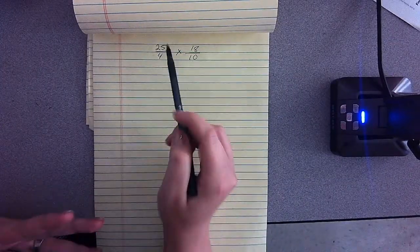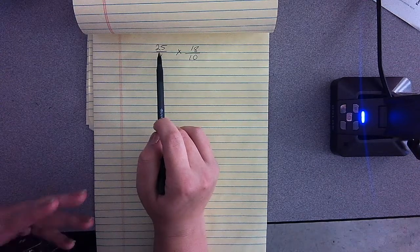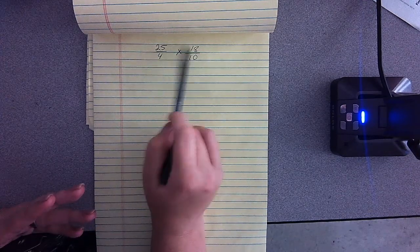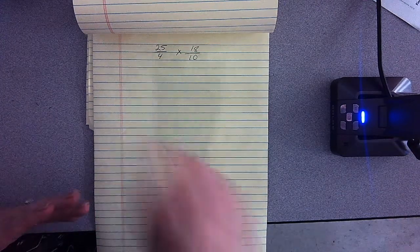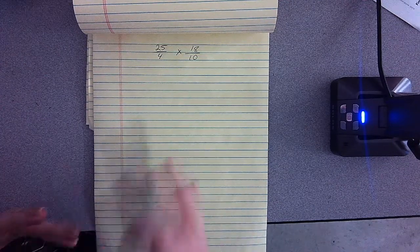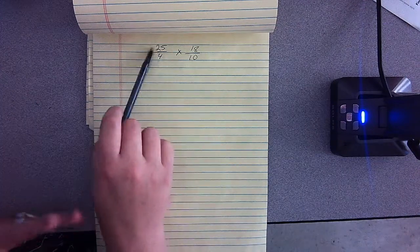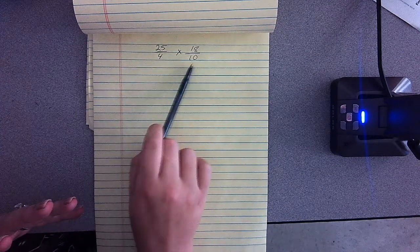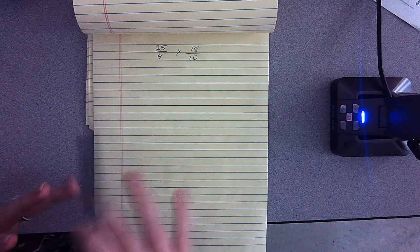So it would just be easier to do method two rather than have to do two by two digit multiplication and then simplify. So the method two that I have been encouraging when multiplying fractions with multi-digit numerators or multi-digit denominators works like this.